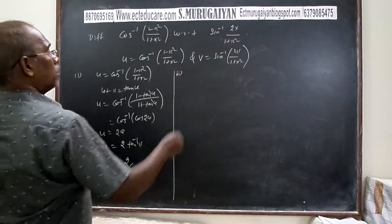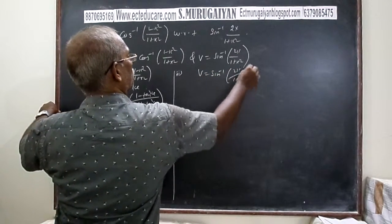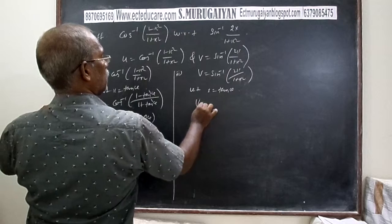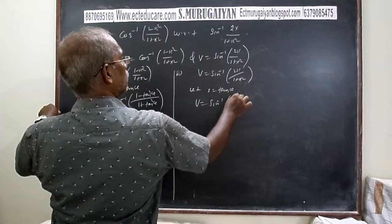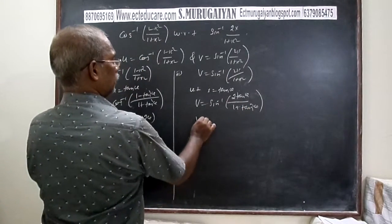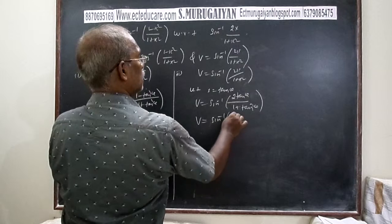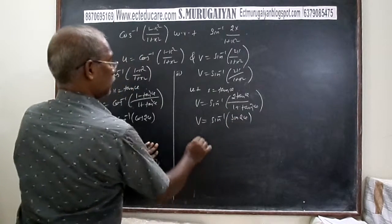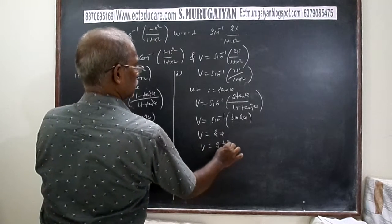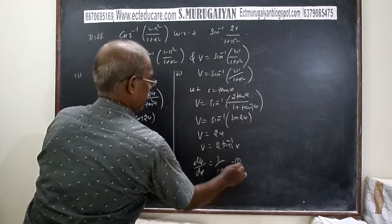Case 2: v = sin⁻¹(2x/(1 + x²)). Let x = tan θ. Then v = sin⁻¹(2 tan θ/(1 + tan²θ)) = sin⁻¹(sin 2θ) = 2θ = 2 tan⁻¹(x). Therefore dv/dx = 2/(1 + x²). This is the second result.